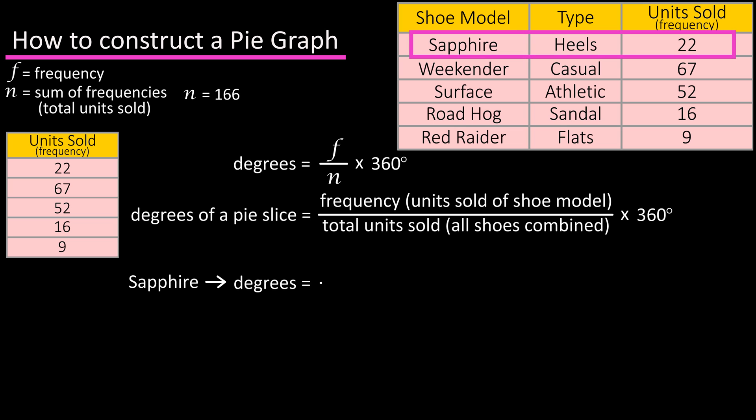So for the sapphire shoe, we have 22 sales, divide that by the total number of sales n, which is 166, and we get 0.1325, and we take that and multiply it by 360 degrees to get 47.7 degrees, which we can round off to 48 degrees.